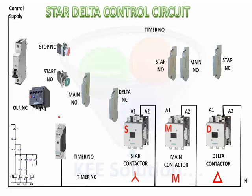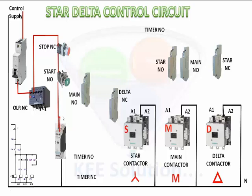Now see how the connections are made. The power will come through the MCB, then the overload relay, then it will go to NC of stop and start, then it will go to the timer and give a loop to the common of the timer.